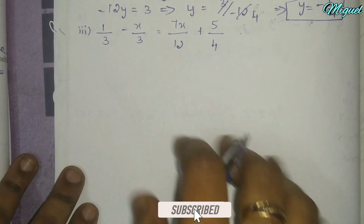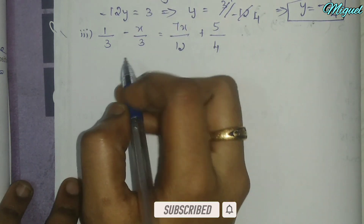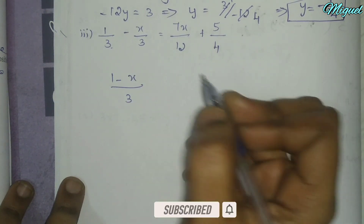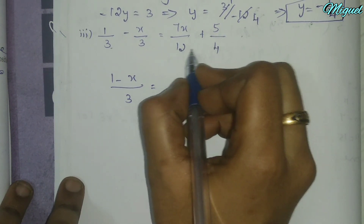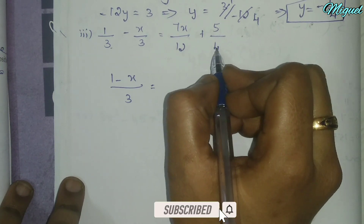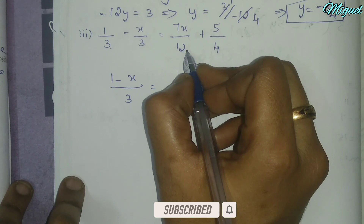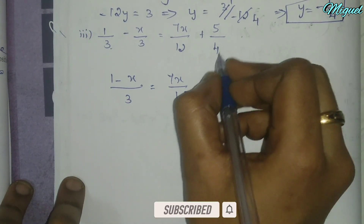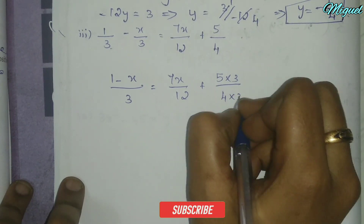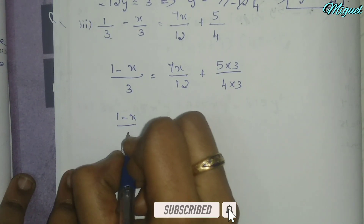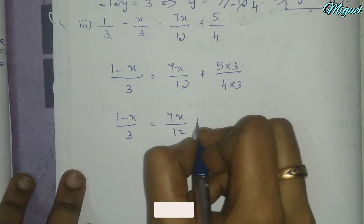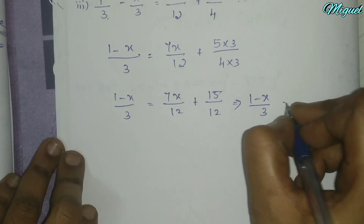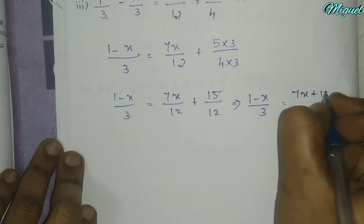Subdivision number 3: we need to find the value of x. When the denominators are the same on both sides, we cross multiply. Multiply 4 on the other side: 7x by 12 plus 5, with 3 threes being 15 by 4 and 3 threes are 12. So (1 minus x) by 3 equals 7x plus 15 divided by 12.